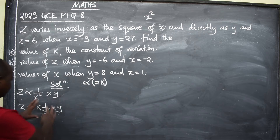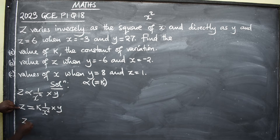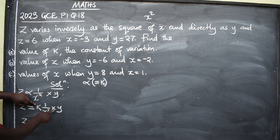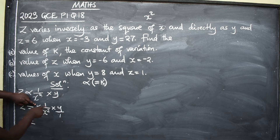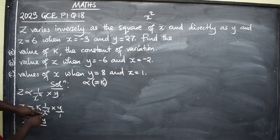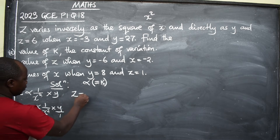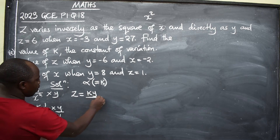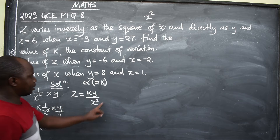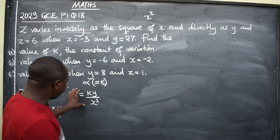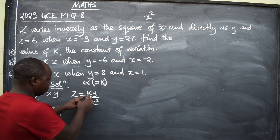Now write this nicely. Z equals K times one over X squared times Y. Because Y is in the numerator, K times 1 times Y gives us KY, and down here we have X squared. So the equation is Z equals KY over X squared. This is the equation we are going to use involving K.